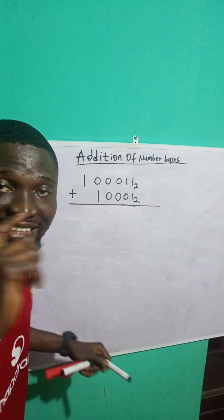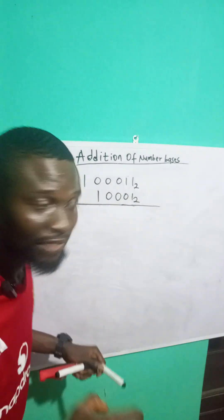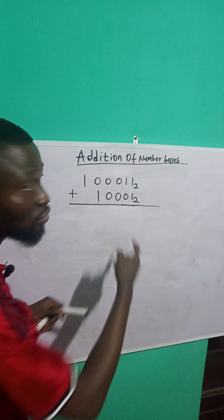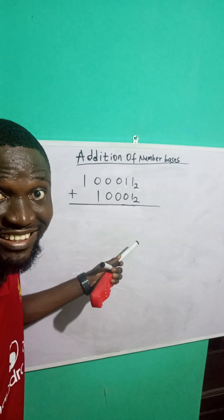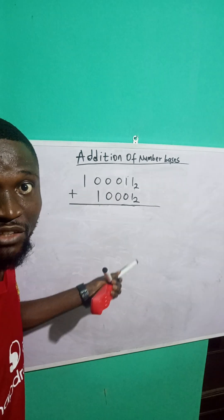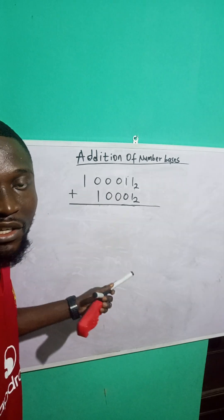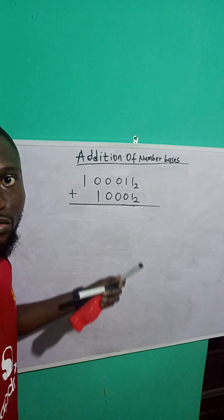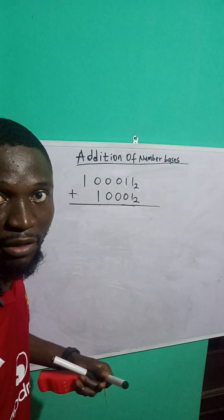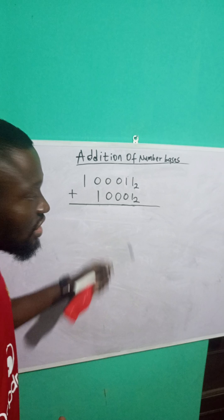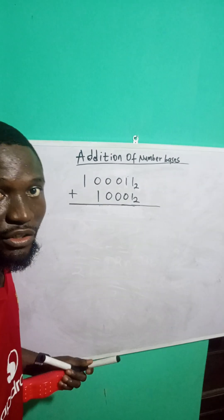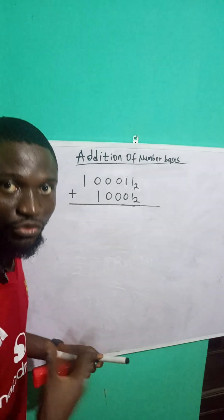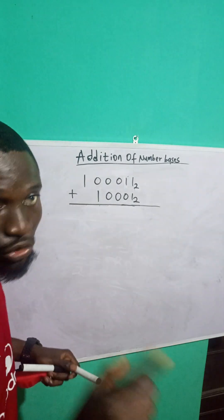You cannot get 2 exactly because this is base 2. So any number that is 2 or greater than 2, what you are going to do is to divide that number by 2. Keep the remainder and take the quotient to the next level. Let me show you.